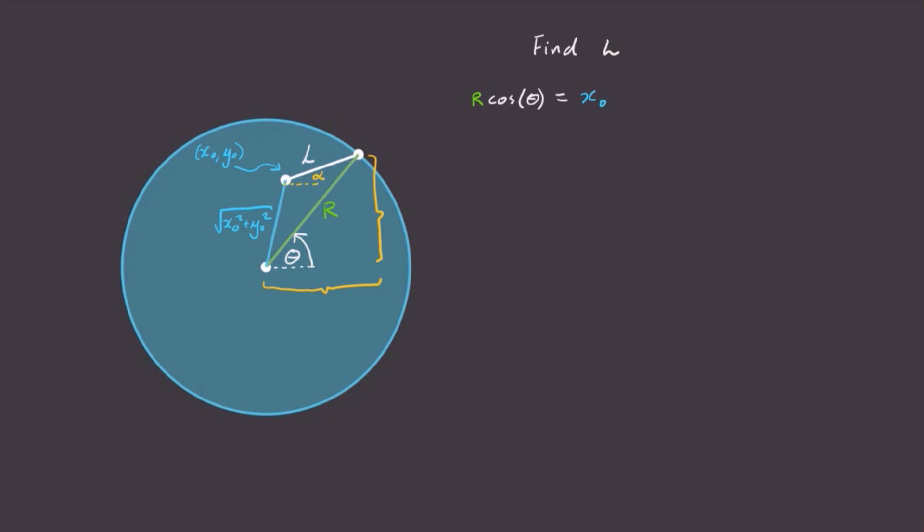Let's define this angle here as alpha. So that distance is just l cosine alpha.